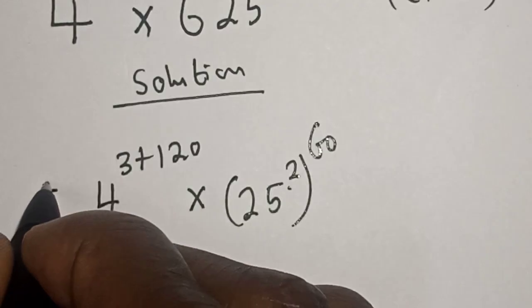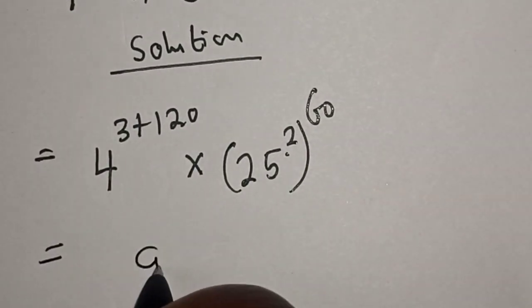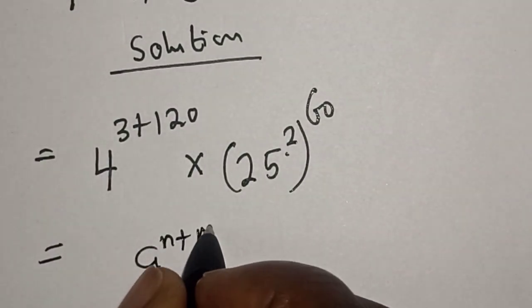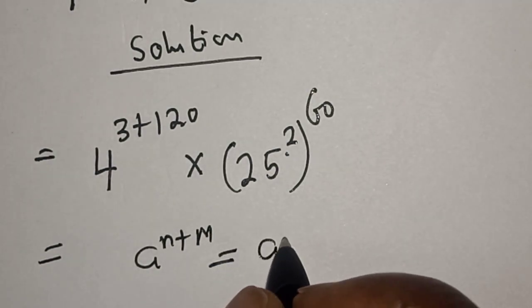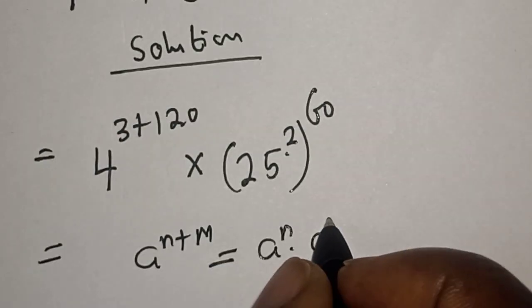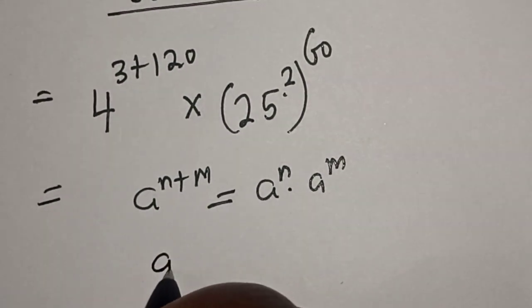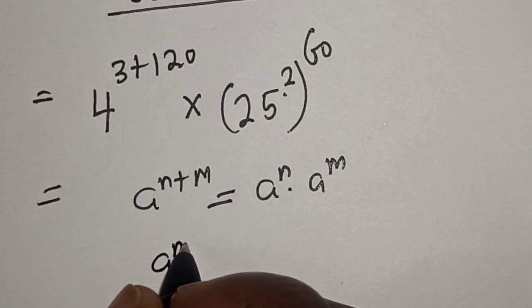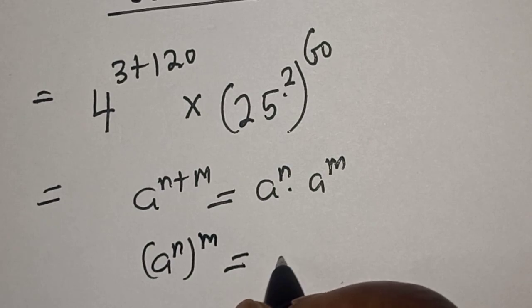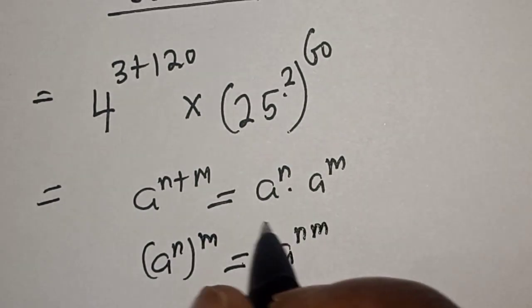Take note of these rules: if you have a raised to the power of n plus m, this equals a raised to power n multiplied by a raised to power m. Also, a raised to power n, then to the power of m, equals a raised to power n times m.